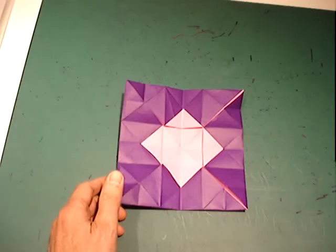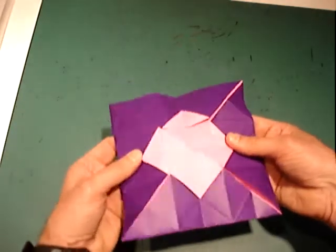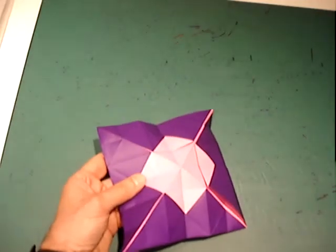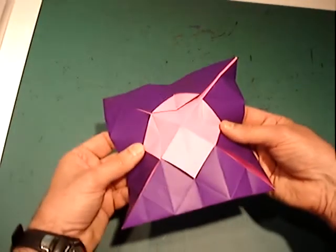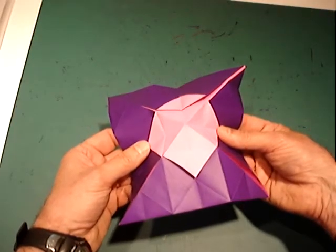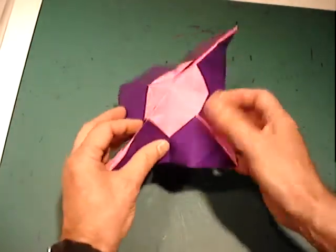Hold the paper with both hands on the horizontal. Push the horizontal folds inwards from both sides. This will form what is called a bomb base.